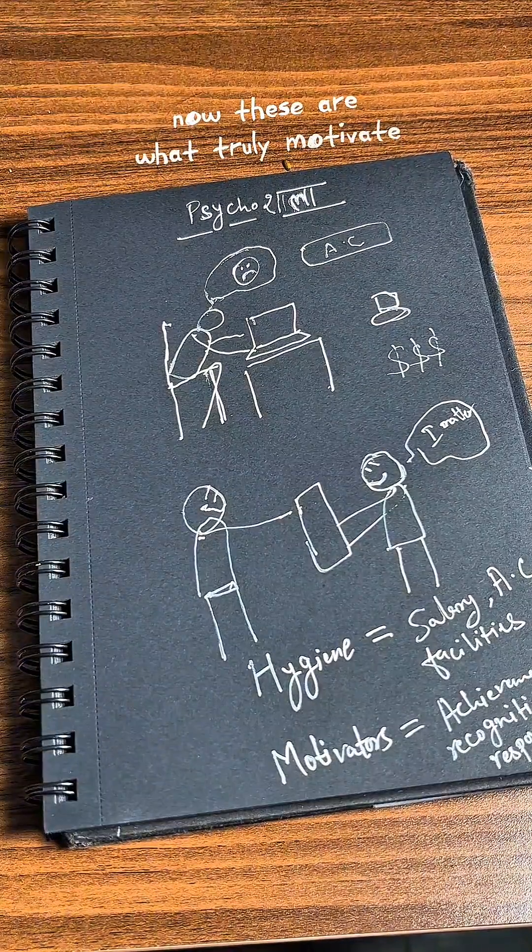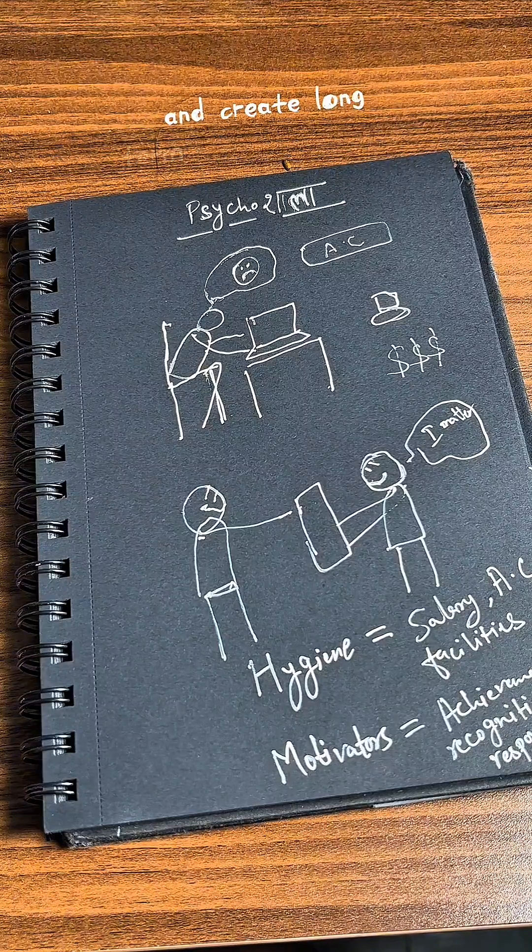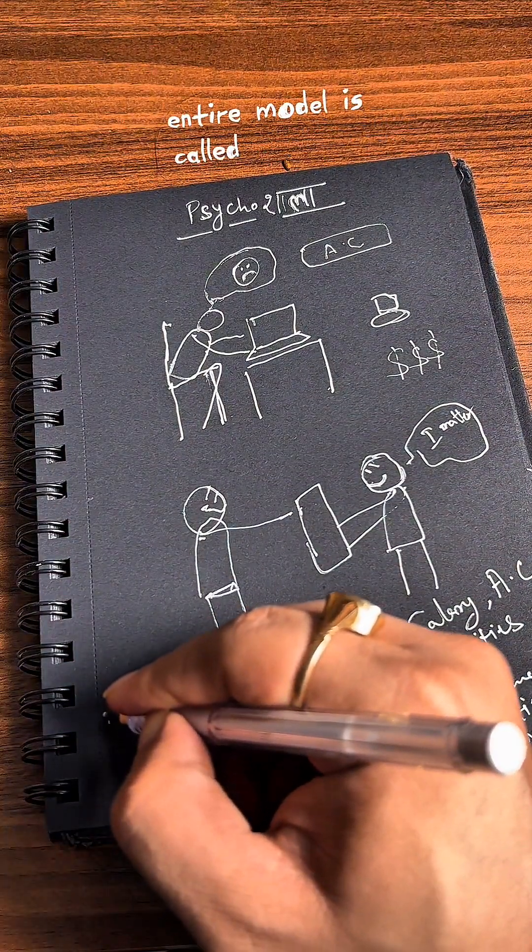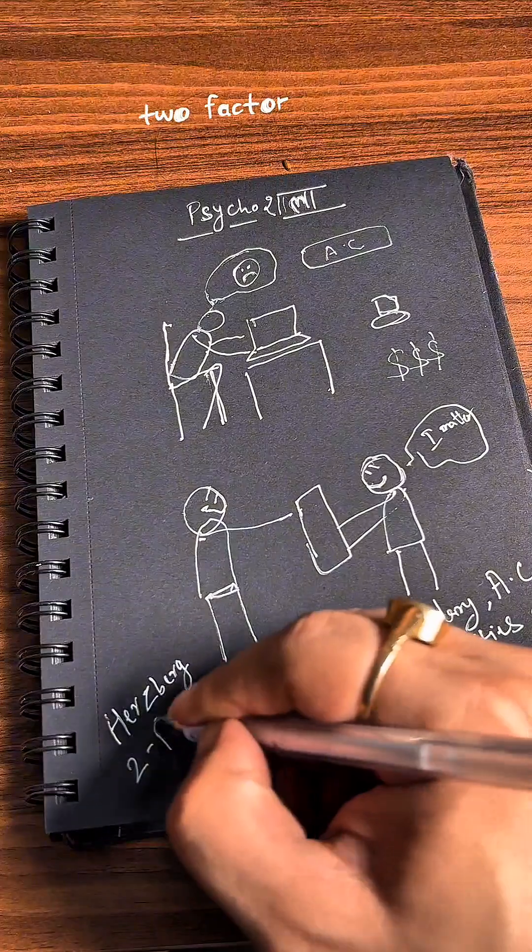Now, these are what truly motivate people and create long-term satisfaction. This entire model is called Herzberg two-factor theory.